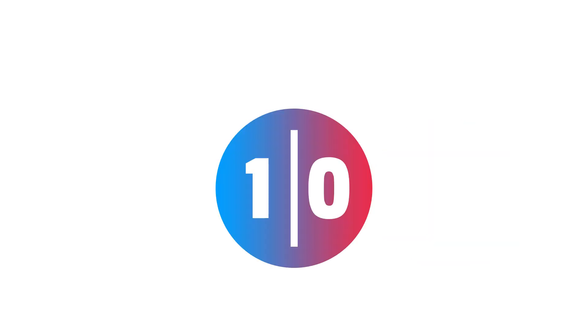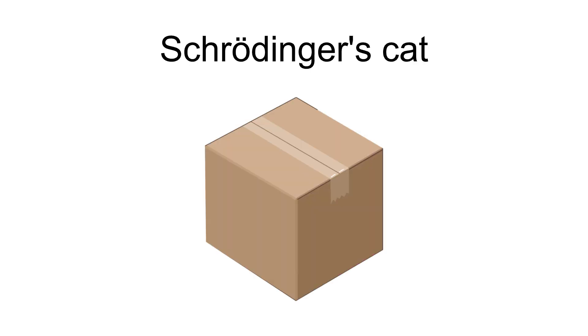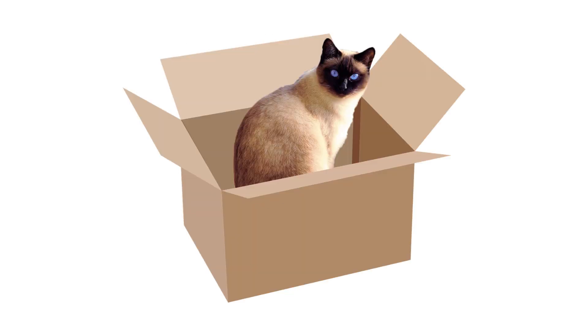The unmeasured state of the qubit is called superposition. Just like Schrödinger's cat — it's both dead and alive until we open the box. She's lucky this time.